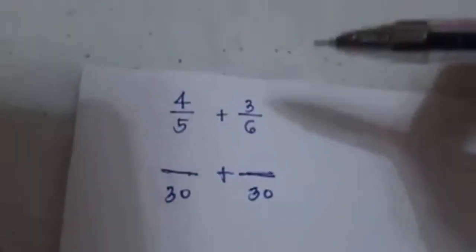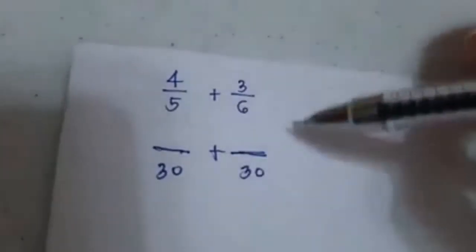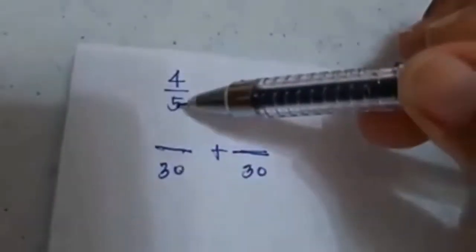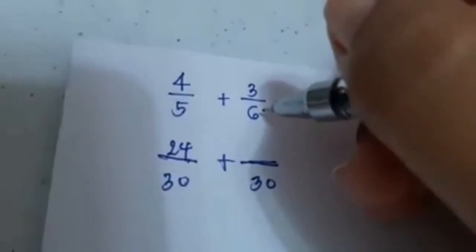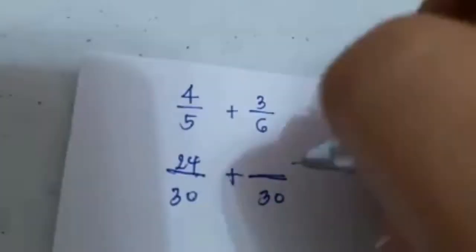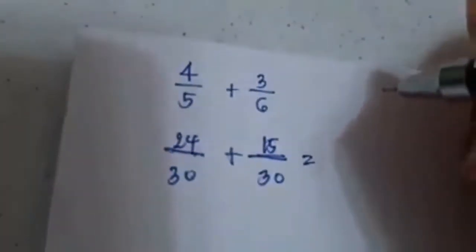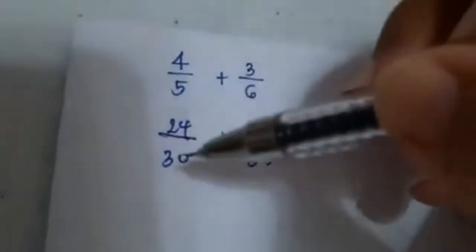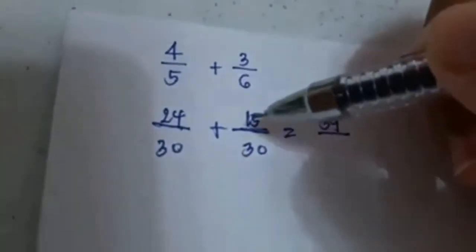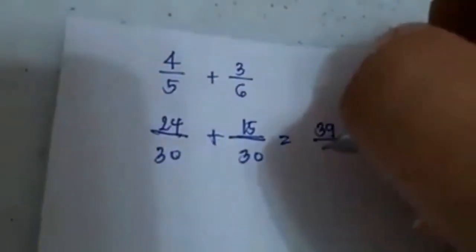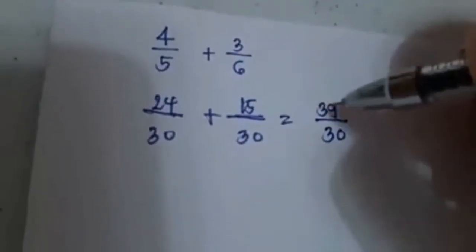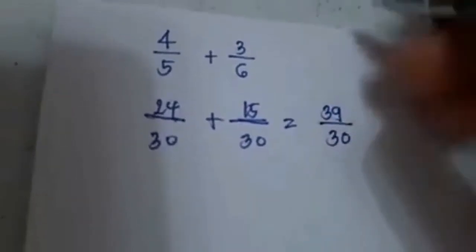Now to convert these dissimilar fractions to similar ones, divide the LCD by the old denominator. 30 divided by 5 equals 6, times 4 equals 24. Then 30 divided by 6 equals 5, times 3 equals 15. Now you have 24 plus 15, the answer is 39. When you add fractions you just add the numerators and copy the denominator, which is 30. Looking at your answer, you have a numerator greater than your denominator, so this is an improper fraction.